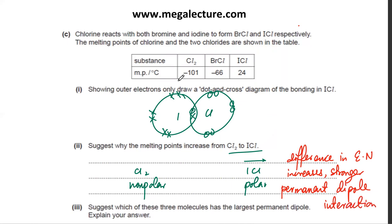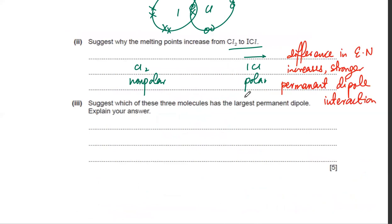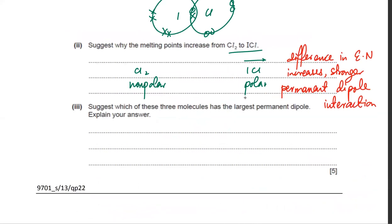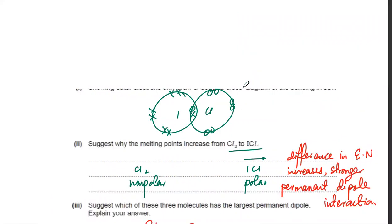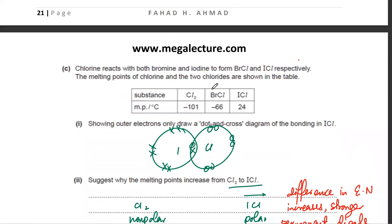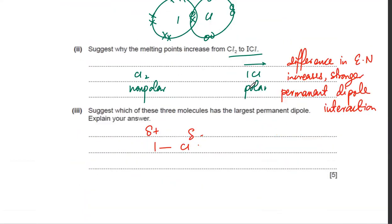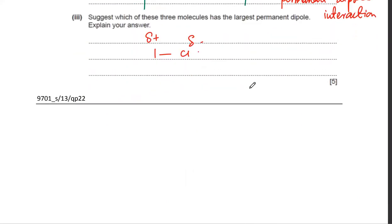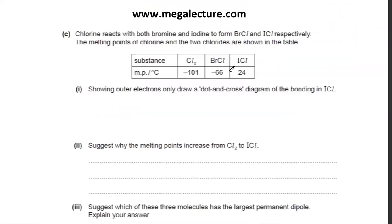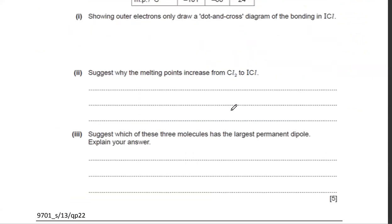ICl has the largest permanent dipole of the three molecules because it has the biggest difference in electronegativity. Remember, electronegativity decreases down the group, so ICl has the strongest permanent dipole.